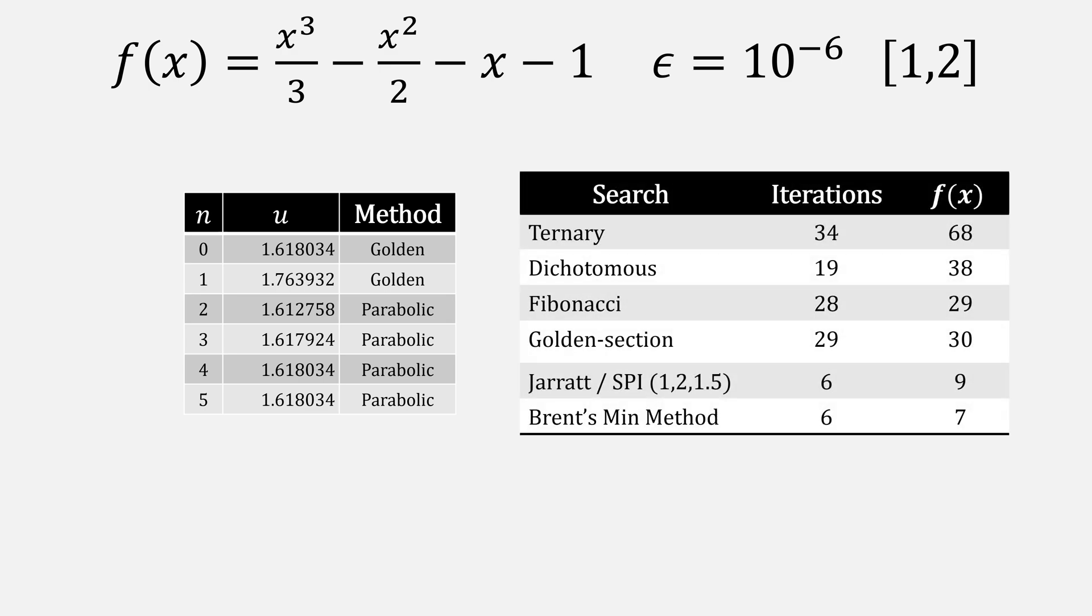If we compare that against all of our other search techniques, Brent's method is by far the best. Keep in mind it also found our minimum in the first iteration, but it doesn't know that until the shrinking interval is small enough.